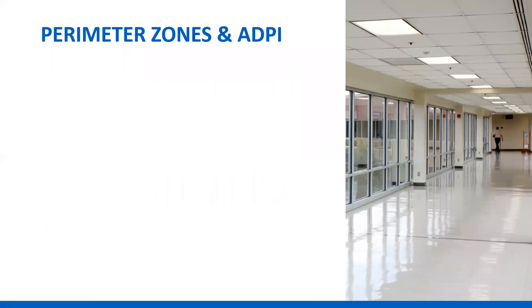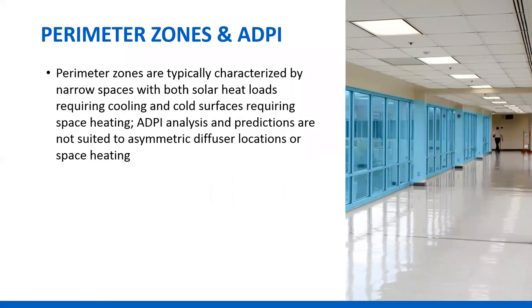Because of the asymmetrical nature of air distribution — you need to have it closer to the window, not the center of the space — it causes a problem trying to do ADPI in a perimeter zone. ADPI assumes uniform air distribution in all directions from a diffuser, so it's difficult to make ADPI work in an asymmetric diffuser location. While there is some interesting data coming on doing ADPI for heating, the details haven't been worked out yet — so for now, you're not going to use ADPI in a perimeter zone.